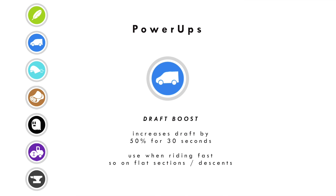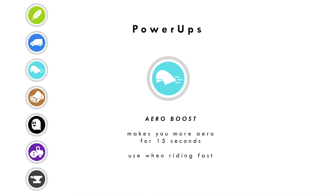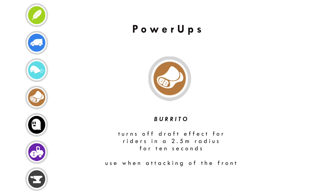The aero boost is the helmet icon — it makes you more aerodynamic for 15 seconds. Use this at higher speeds on the flat or descending, especially when there's no draft available, though it's still useful when drafting. The burrito is the burrito icon — it turns off the draft effect for other riders within a 2.5 metre radius for 10 seconds, and is only available in an event. Use it when attacking off the front so opponents have to work harder to keep up.